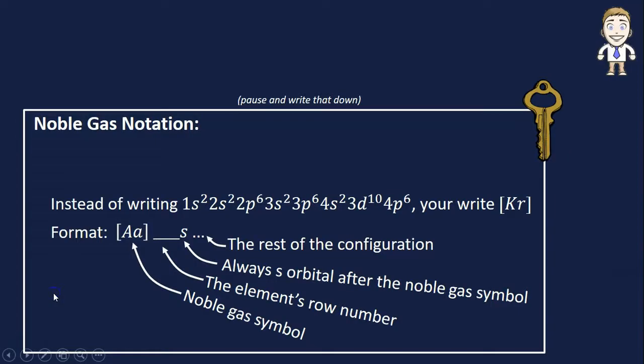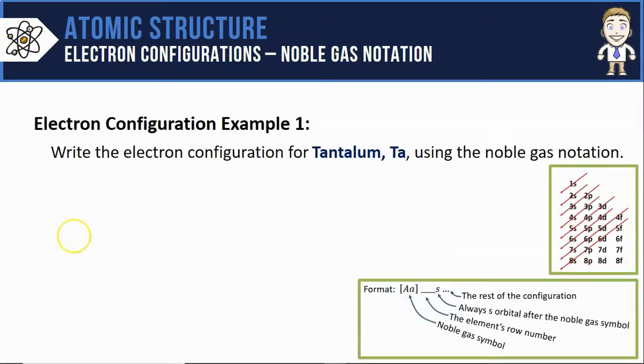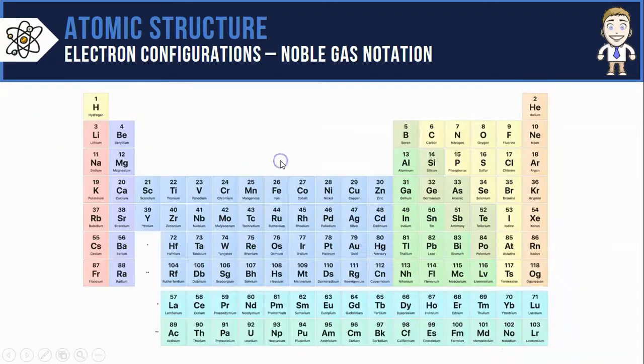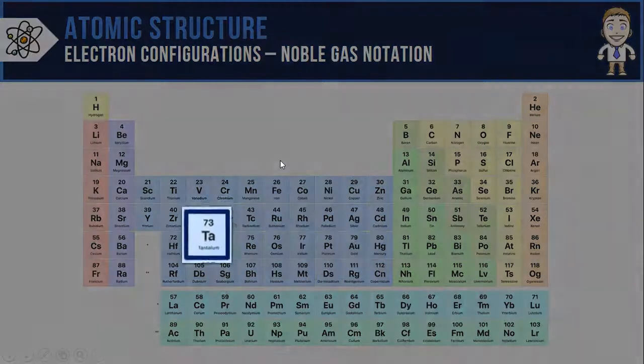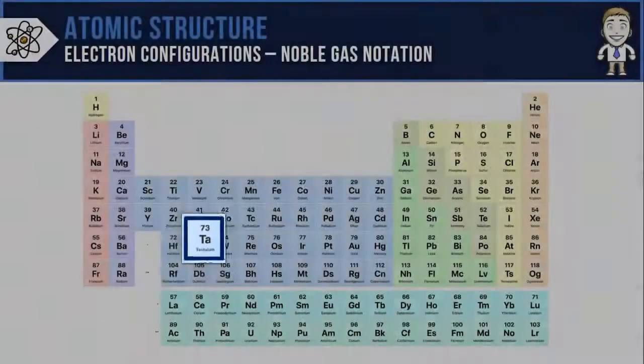Make sure you've taken a moment to write down some of these key ideas and the correct format. All we need now are a couple examples. Let's try to do the configuration for tantalum using the noble gas notation. Starting with a periodic table, I see that tantalum has 73 electrons.